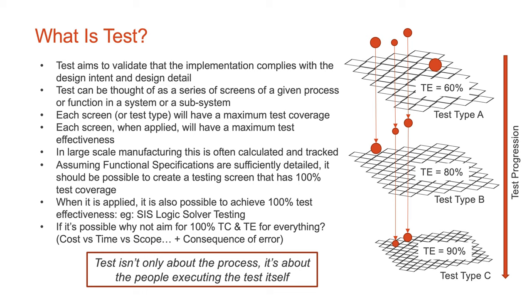You can measure that test effectiveness to an extent. In large-scale manufacturing, this is often calculated in detail and tracked through test processes. Assuming there's a functional specification that's sufficiently detailed, it should be possible to create a testing screen that has 100% test coverage. When it's applied, it's also possible to achieve 100% test effectiveness. A good example of that is a safety system with a safety logic solver, tested with every possible combination — 100% test coverage and 100% test effectiveness.